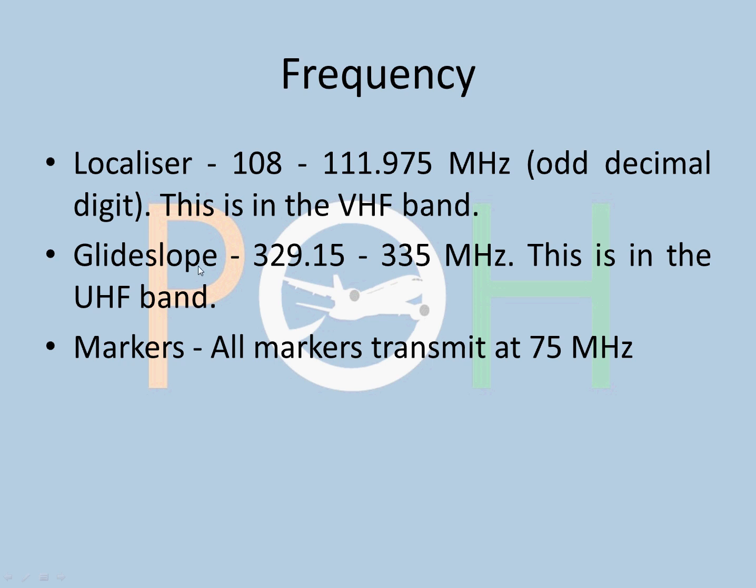Glide slope: 329.15 to 335 MHz. This is in the UHF band. The localizer was in the VHF band. This is the UHF band. Markers are all at 75 MHz.